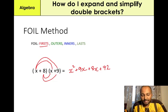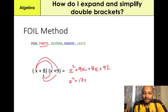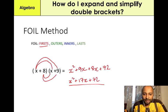And then we have 8 times 9, which gives us 72. At this stage, again, you just collect like-for-like terms — the terms in the middle that are similar. So we have 9X plus 8X, which gives us 17X plus 72. Our final answer is X squared plus 17X plus 72.